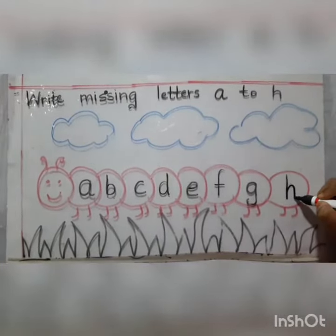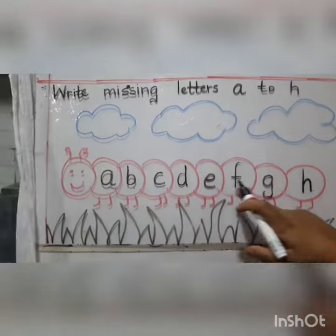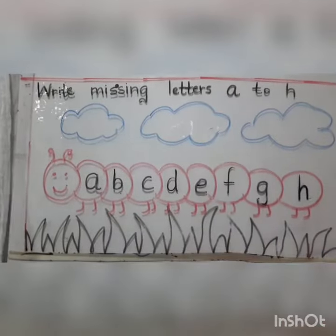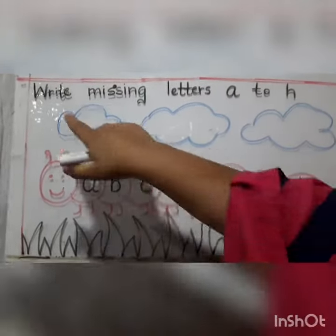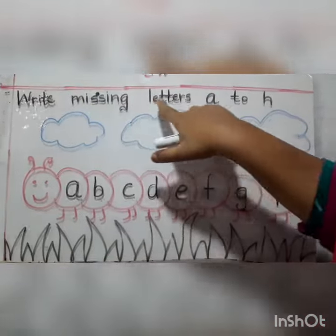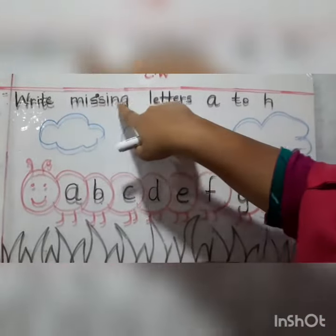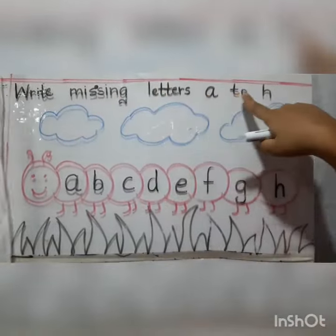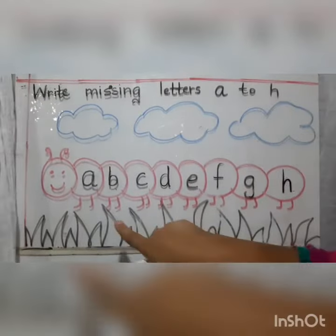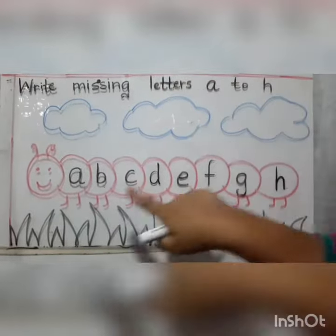Yes! Now all the missing letters are back. Corrie is happy. So today children, we learned about missing letters. We learned about missing letters A to H. You have to practice missing letters in your book.